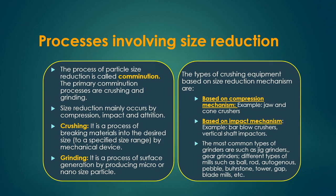Size reduction is sometimes needed to get better yield for a particular process, and to use catalyst at a particular size range. The process of particle size reduction is called comminution; the primary comminution processes are crushing and grinding. Size reduction occurs mainly by compression, impact, and attrition mechanisms.